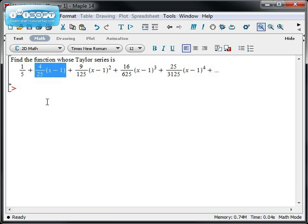1/5 plus 4/25 times (x - 1), plus 9/125 times (x - 1) squared, plus 16/625 times (x - 1) cubed, plus 25/3125 times (x - 1) to the 4th, etc.